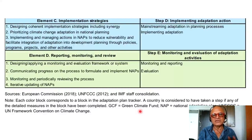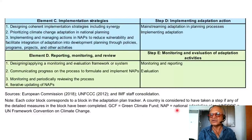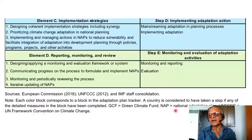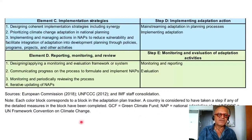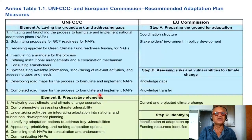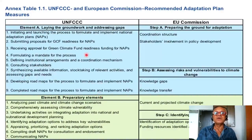You can follow up with the details since I won't be able to track the color codes with an explainer each time. A country is considered to have taken a step if any of the detailed measures in the block have been completed. GCF is Green Climate Fund, NAP is National Adaptation Plan, and this is the UN Framework Convention on Climate Change. These reports are a bit dated but still very relevant. Let me read UNFCCC first and then the European Commission.